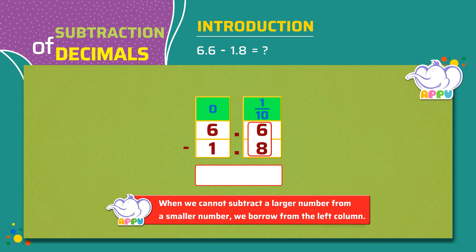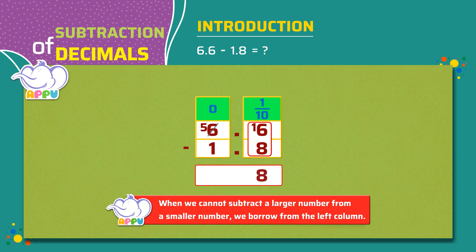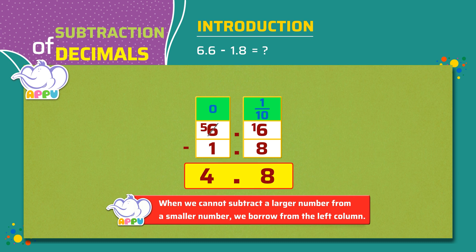When we do this, 6 ones become 5 ones and we get 1 to the tenths column. So now we have 16. Now we can easily subtract 8 from 16, which is 8 in the tenths place. We place the decimal point. Since we borrowed the 1 from 6, the 6 has become 5. So when we subtract 1 from 5, we get 4 in the ones place. The answer is 4.8. So 6.6 minus 1.8 is equal to 4.8.